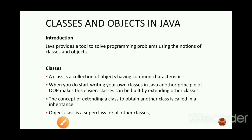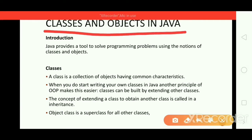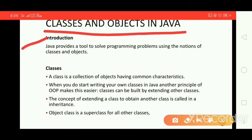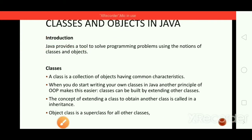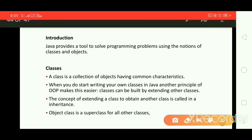Welcome back to my Java online class. Today I'm going to explain the topic called classes and objects in Java. Java provides a tool to solve programming problems using the notions of classes and objects, because classes and objects are the basic building blocks of object-oriented programming language. These classes and objects act like a tool to solve programming problems.